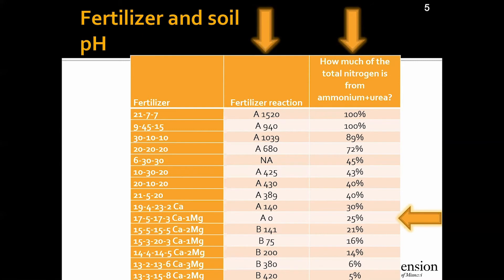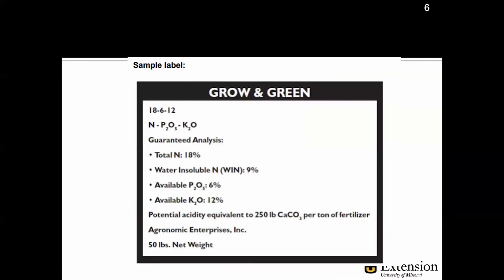On the other hand, if you have a fertilizer in which less than 25% of the total nitrogen comes from ammonium and urea, this fertilizer will have a basic effect on the soil. It is important that you check the label — most fertilizers will tell you what percentage of the total nitrogen comes from ammonium, urea, or nitrate. Here's an example of a sample label. You have the first three numbers, which refer to the percentage of nitrogen, phosphate, and potash. This specific product's label doesn't specify which percentage of the total nitrogen comes from ammonium, nitrate, or urea. However, it does tell you the potential effect of this fertilizer on the soil — it has a potential acidity equivalent of 250 pounds of calcium carbonate per ton of fertilizer, meaning that this fertilizer will acidify the soil.